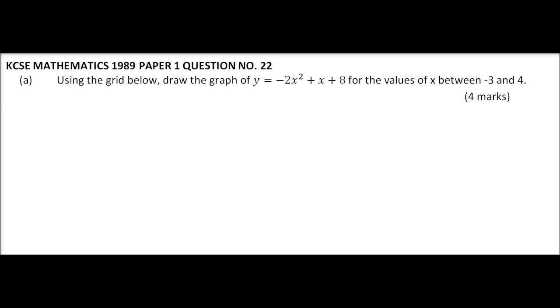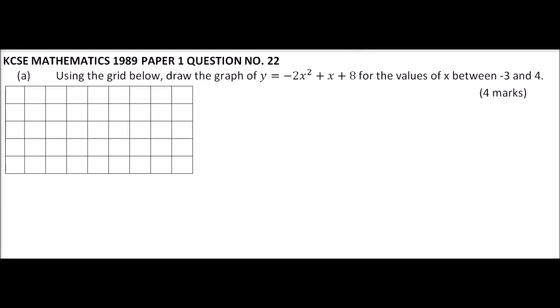For Part A, we insert a table to help us draw the graph of y = -2x² + x + 8. We start with the values of x: since x should be between -3 and 4, we use -3, -2, -1, 0, 1, 2, 3, and 4. Then we have a row for -2x².